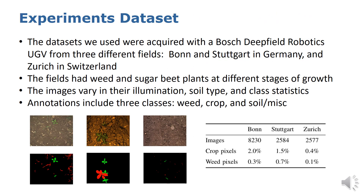We next describe our experimental evaluation. The sugar beet datasets used in our experiments were acquired with the Bosch Deep Field Robotics UGV. The robot was developed to assist in several agricultural applications, including mechanical weed control and selective herbicide spraying. It is equipped with multiple sensors including cameras. For our experiments, we only used the RGB data provided by the camera. The data was captured in three different fields: one in Stuttgart in Germany, and Zürich in Switzerland. The datasets have weed and crop plants at different stages of growth, and the images vary in their illumination, soil type, and class statistics, as can be seen in the images here.